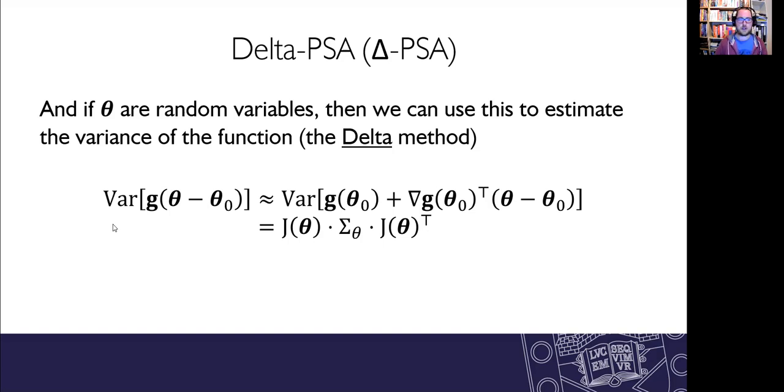So the variance of your outputs from your model is determined by the variance of your inputs that sigma theta with the Jacobian matrix on either side.